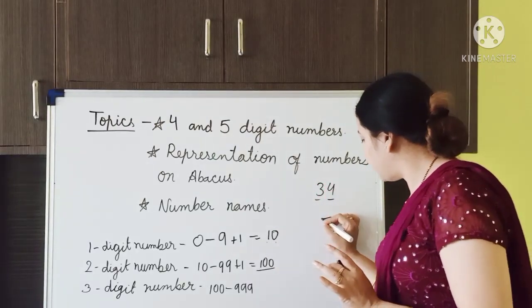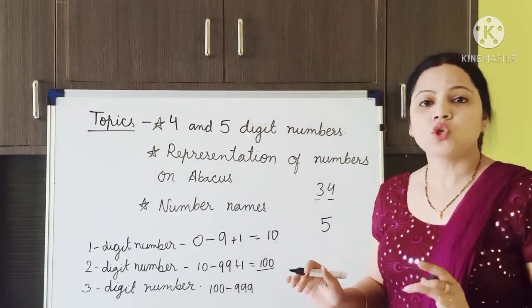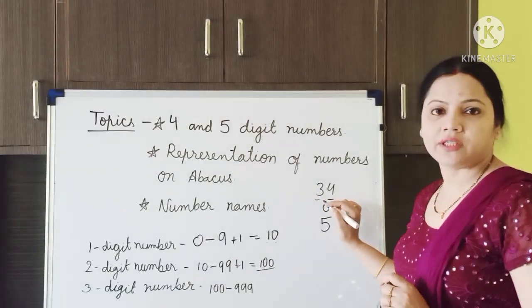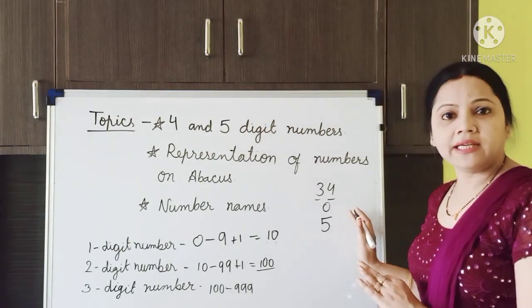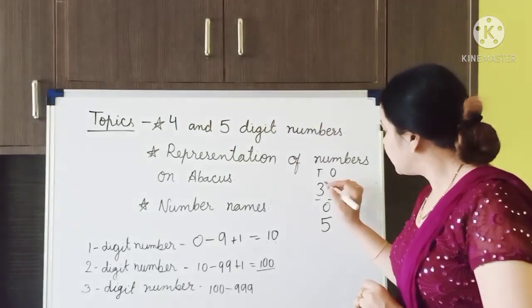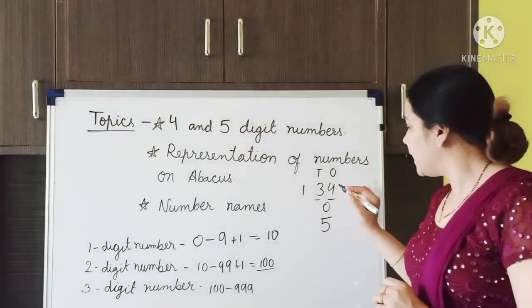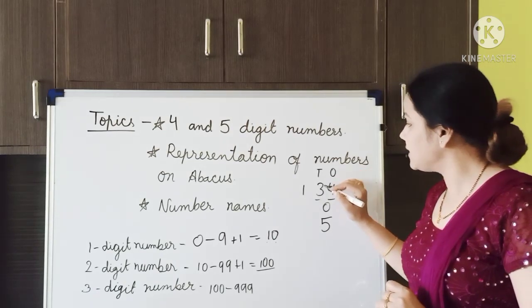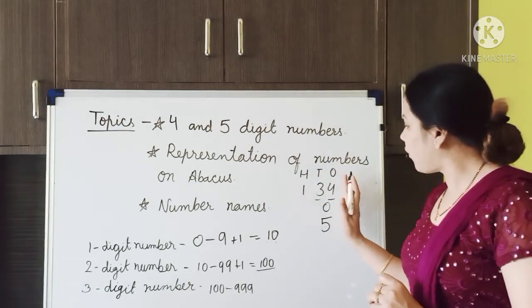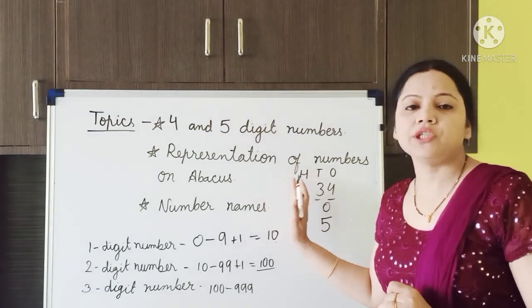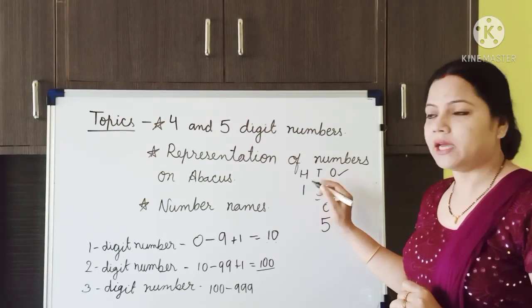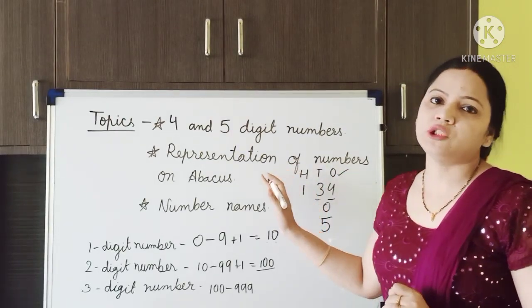Now suppose I write only the number 5 — this is a 1 digit number and it is at the 1's place. Now suppose I write 34: the rightmost digit is at 1's position and the next one is at 10's position. Now for 134, a 3 digit number: 4 is at 1's position, 3 is at 10's position, and 1 is at 100's position. So from right to left we increase the place value — the rightmost is the smallest place and the leftmost is the biggest.